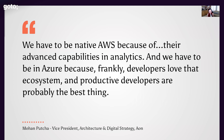Another great quote is from Mohan Pucha, Vice President of Aon: 'We have to be native AWS because of their advanced capabilities in analytics. And we have to be in Azure because frankly, developers love that ecosystem — and productive developers are probably the best thing.' This signifies it's not just top-down decisions; more developers are starting to see multi-cloud as another tool in their toolbox. In the end, it comes down to wanting to use the best tool for the job and not being locked into any specific cloud vendor.